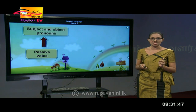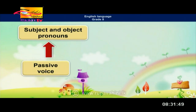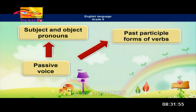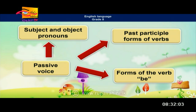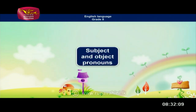When you write sentences in passive voice, what are the things that you should know? There are three basic things you have to keep in mind. The first thing is subject and object pronouns. Then you have to know past participle forms of verbs. And then you have to know forms of the verb 'be' — that is the most important thing. Let's move on to see what the subject and object pronouns are.